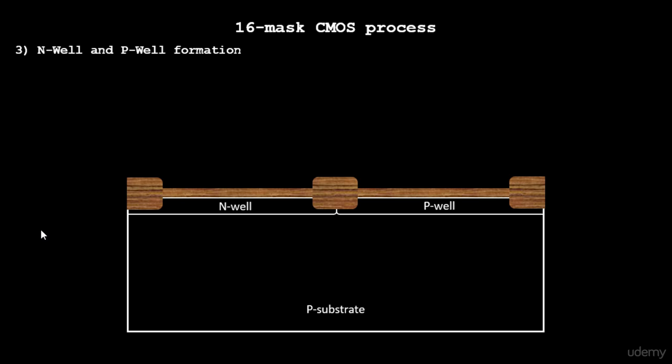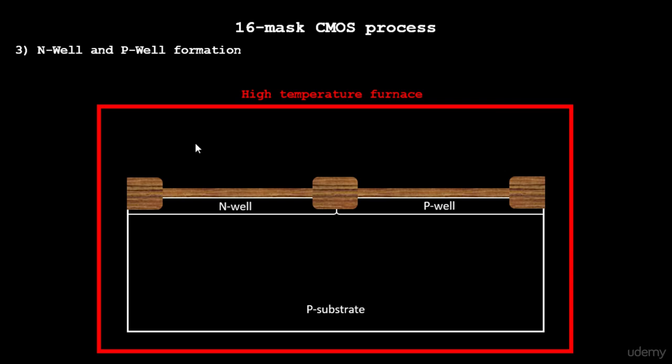Next, we have to diffuse the well so that it occupies almost half of the substrate area, so we have clear room available for the PMOS and NMOS fabrication. The next step is to take this complete substrate into a high temperature furnace called a drive-in furnace.